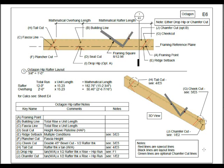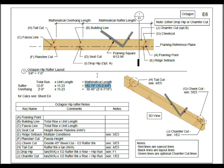The octagon hip rafter layout will need to set our framing square to 8 over 12.98. 12.98 is our unit length. Starting from point A, your framing point, and B, your building line — that'll be your mathematical rafter length. That'll be your total run of 12 feet times your unit length of 15.23, giving you a mathematical length of 15 feet 2 and 3 quarters inches.